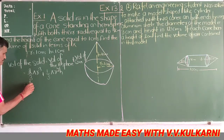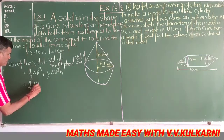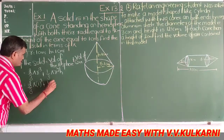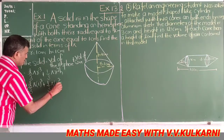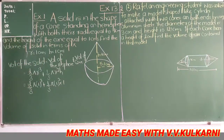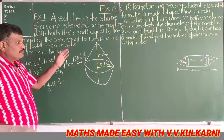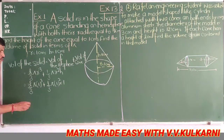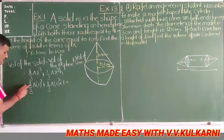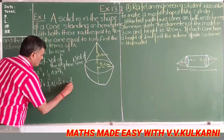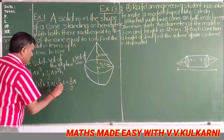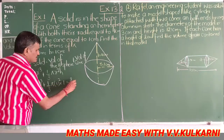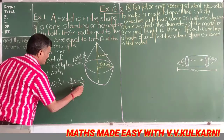So this will be 2/3 π into 1³ plus 1/3 π into 1² multiplied by height 1. We want the answer in terms of pi, hame jawab pi mein chahiye, to hum pi ki value waise rakh rahe hain. 1 ka cube 1 hoga, so 2/3 π, and 1 ka square 1 hota hai, so plus 1/3 π, which is pi by 3.